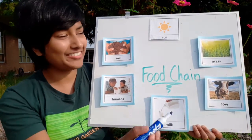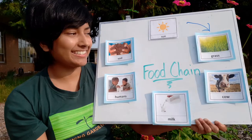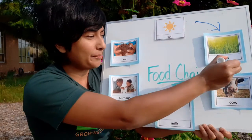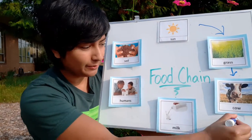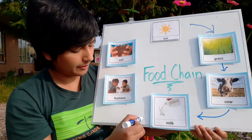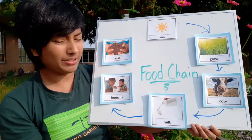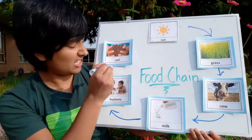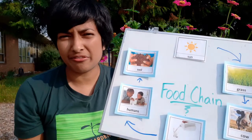So think about where milk comes from, and let's start from the beginning. The sun gives energy to grow grass. Grass is eaten by cows. Cows produce the milk. And humans drink the milk. Once everything is done, it goes back to the soil. Pretty straightforward, right?